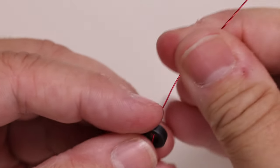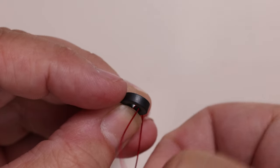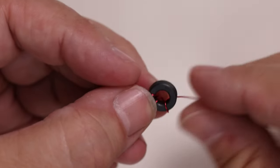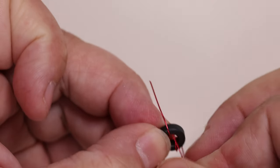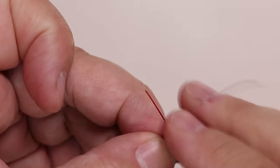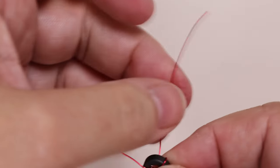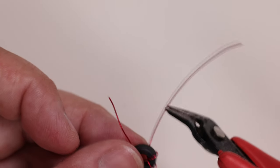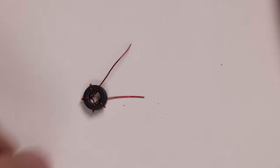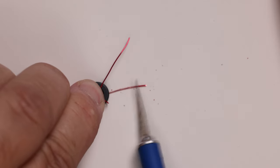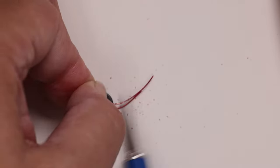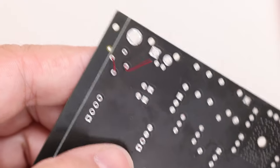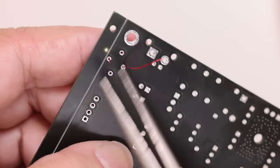Two. Three. Four. Five. Make it nice and snug. Trim. Insert through the board. Cool snug. Both leads.